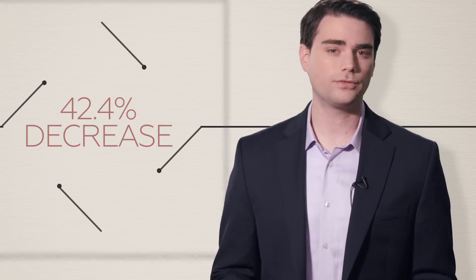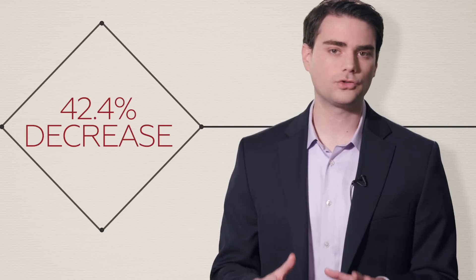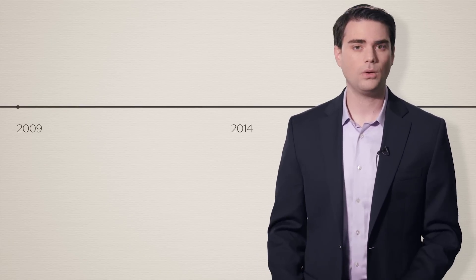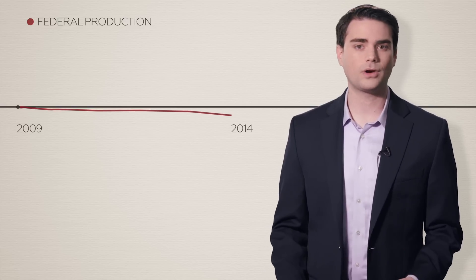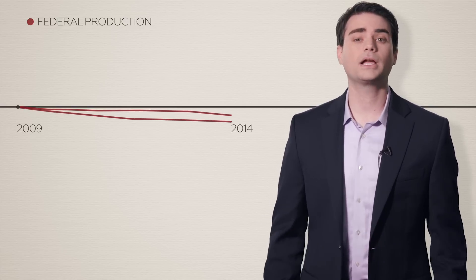According to the Institute for Energy Research, most of the drilling on federal lands actually takes place in the Gulf of Mexico. The Obama administration cut such drilling tremendously in 2011 and 2012. From 2009 to 2014, oil production on federal lands dropped 6%, natural gas production dropped 28%.